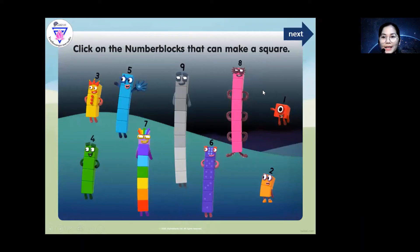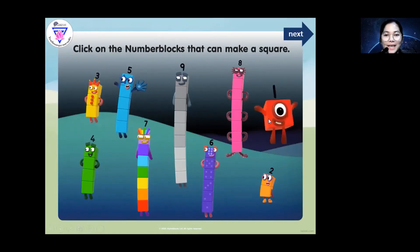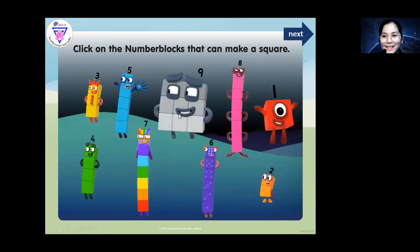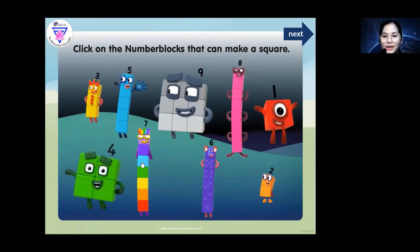Click on the number block that can make a square, like number nine. What about one? Correct — one can make a square. What about number nine? Yes, definitely. And we also have number four. What about number seven? No. Number three? No. Number five? No. Number eight? No. Number six? No. Number two? No.